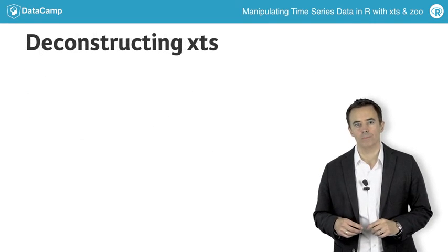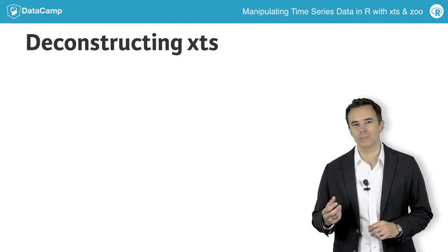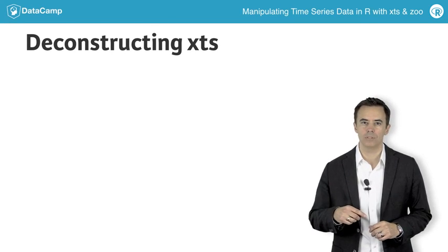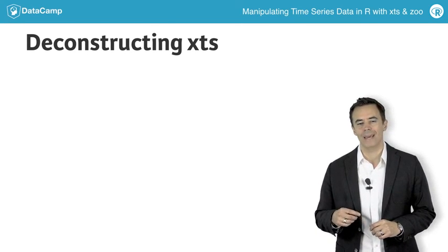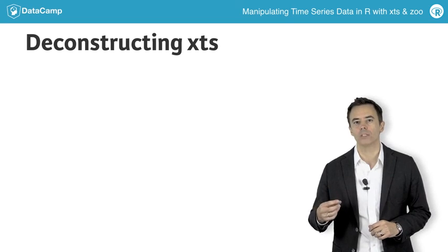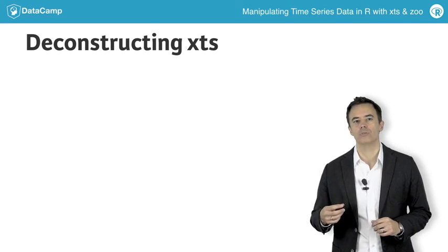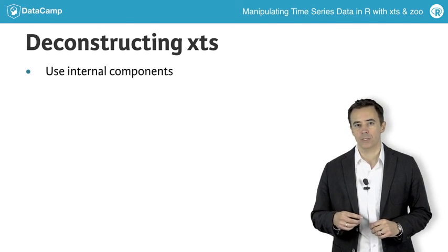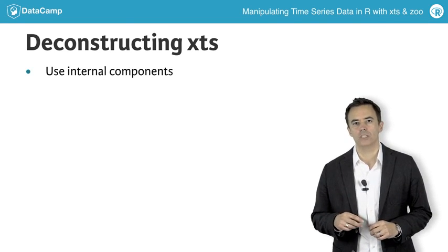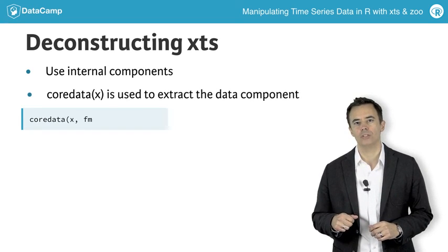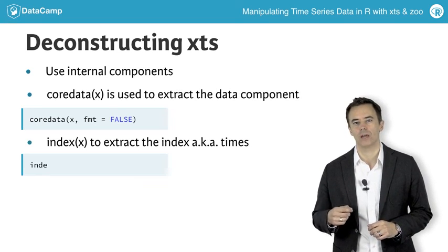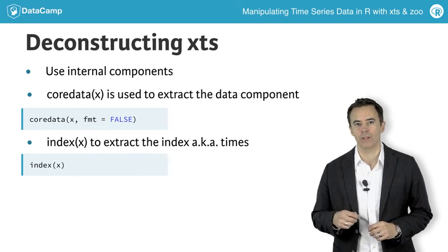One last point before we break out the exercises. Sometimes it'll be necessary to reverse the steps we took to create the time series, and instead extract our raw data or raw times for use in other contexts. XTS provides two functions: coredata is how you get the raw matrix back, and index is how you extract the dates or times. Simple and effective.